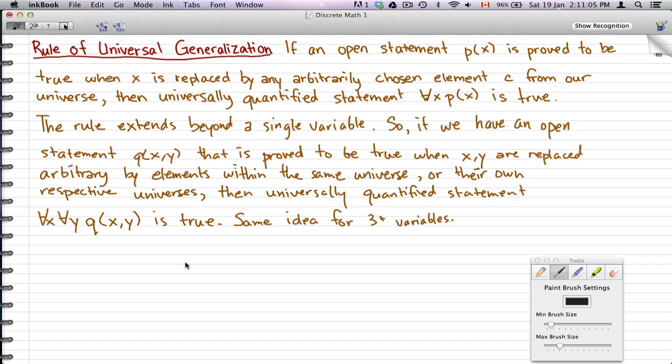and it is true for an open statement p(x), then universally this quantified statement ∀x p(x) is true because whatever x you pick from that universe, when it is compared or used in that open statement, it is always true. So it's a universally true statement, the quantified statement ∀x p(x) is true.